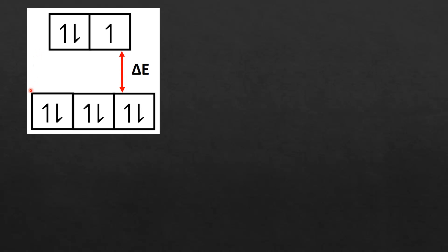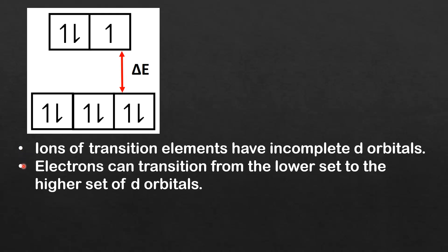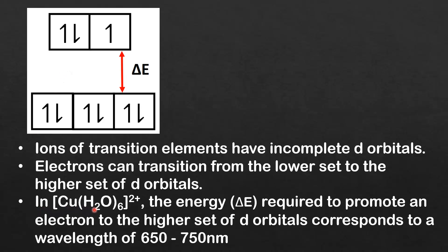Here you can see the d orbitals are split into 2 sets — 2 orbitals of higher energy and 3 orbitals of lower energy. The energy difference between the 2 sets of orbitals corresponds to the wavelengths of visible light. As you may remember from the definition of a transition element, the ions of transition elements have incomplete d orbitals. Electrons can transition from the lower set of d orbitals to the higher set. In the hexa aqua copper 2 ion the energy required to promote an electron from the lower to the higher set of d orbitals corresponds to a wavelength of approximately 650 to 750 nm.